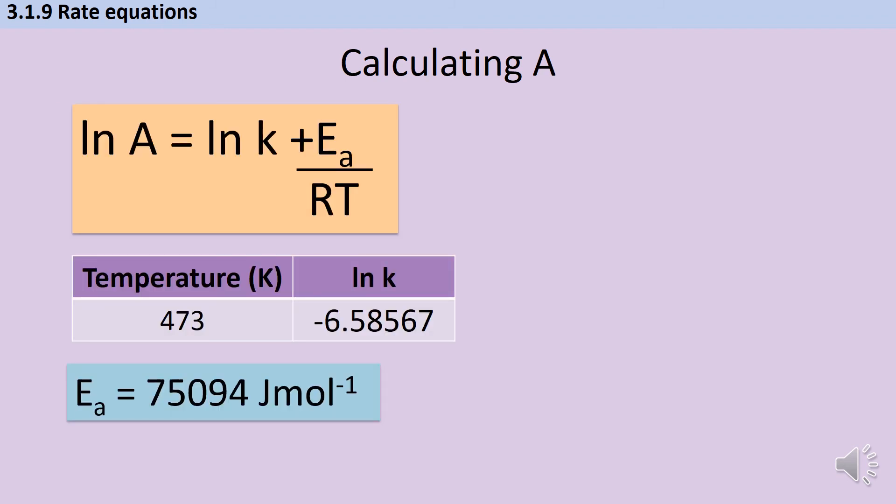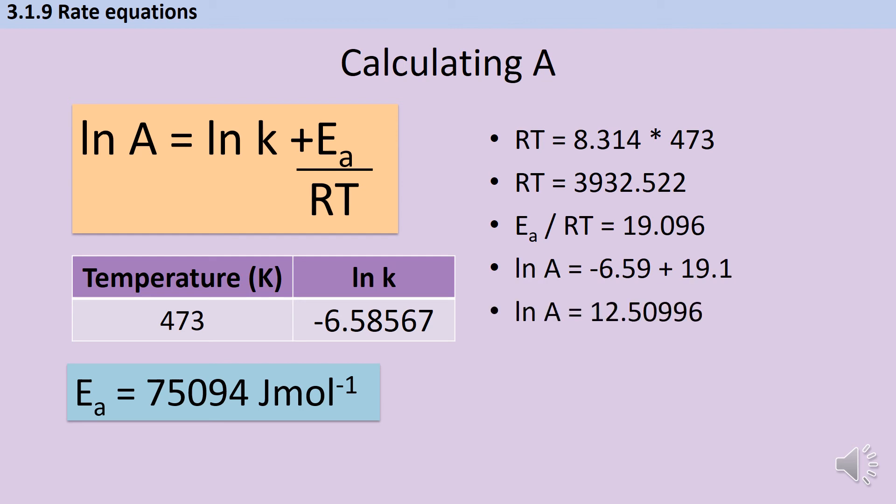I'm going to start out by working out what RT is. So I take the gas constant and multiply that by the temperature in Kelvin, which gives me an answer of 3933-ish. Then I'm going to work out what the activation energy divided by that is, which gives me an answer of 19.096. Then I take my value for the natural log of k from the table, which I've already calculated, and that tells me that I have a value for the natural log of A of 12.51-ish.